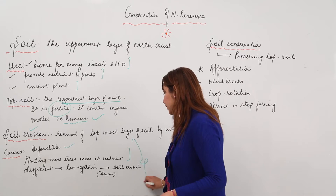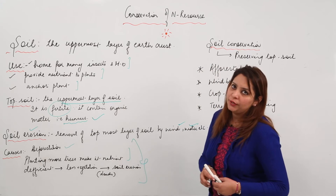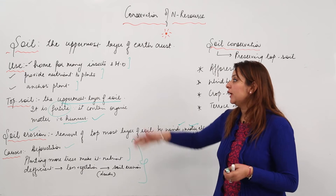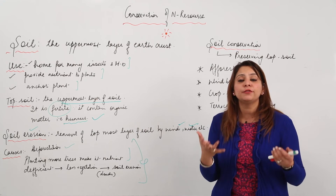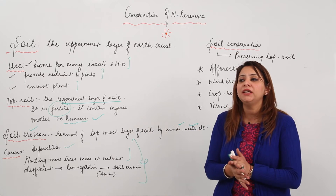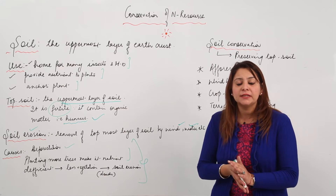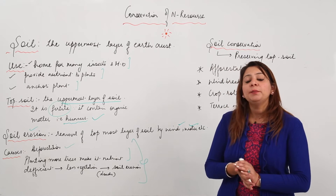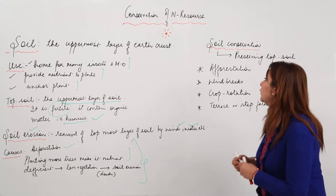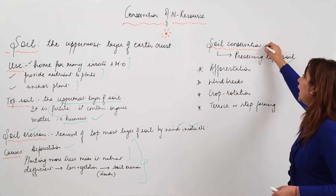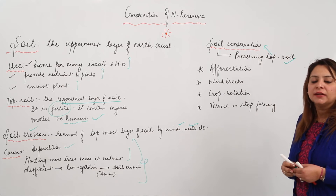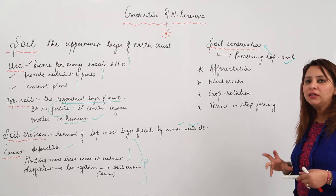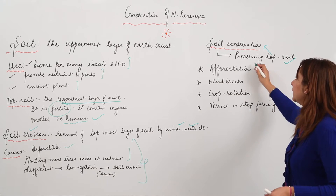These are the major factors that lead to soil erosion. Since soil is very important — as a food source, a habitat for microorganisms, and more — we need to conserve it. The practice of conserving the topsoil is called soil conservation.